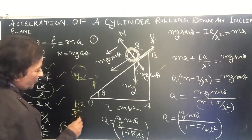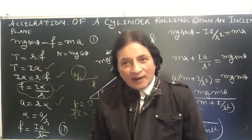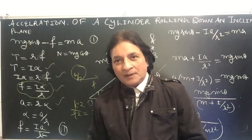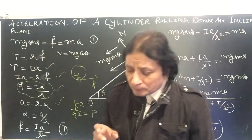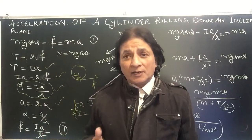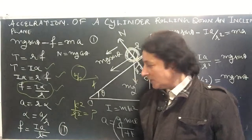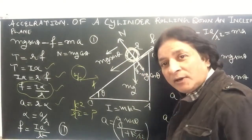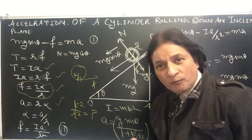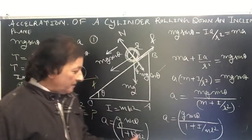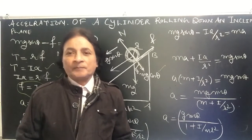Using a equals g sine theta upon (1 plus k squared upon r squared), you can find k squared upon r squared for various rigid bodies and calculate their accelerations. A famous question is: a cylinder, a ring, and a sphere are allowed to roll down an inclined plane — which reaches the bottom first? Just calculate k squared upon r squared for each. This formula is very important for both board level and competition level exams.